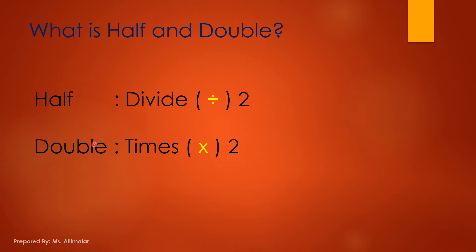Now, how about double? Double means times 2. This is the times symbol — the multiplication symbol. Times and multiplication are the same thing. If you want to double a number, you always times only 2. You cannot go times with 9, or times with 8, or times with 7. You cannot do that. If double, it means only times 2.